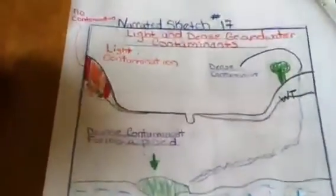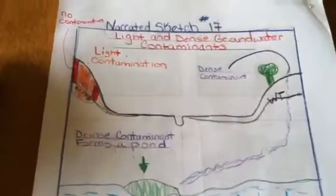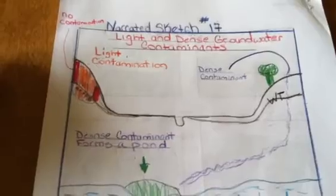This is narrated sketch number 17. It's light and dense groundwater contaminants.